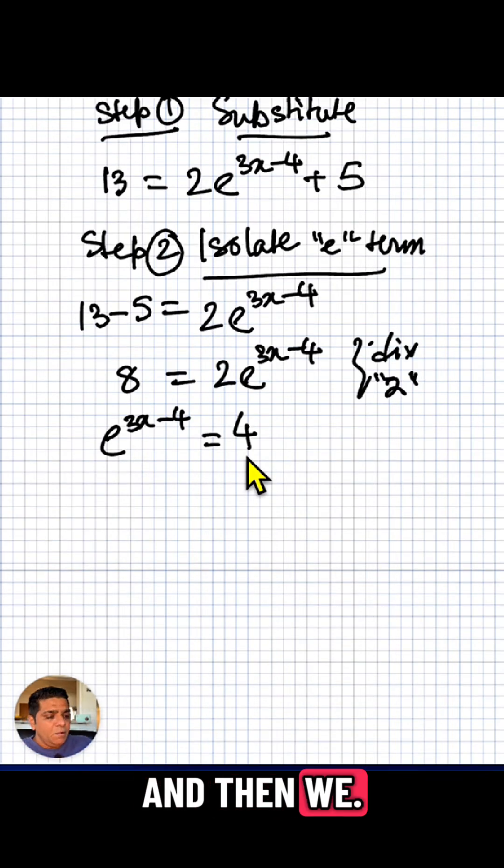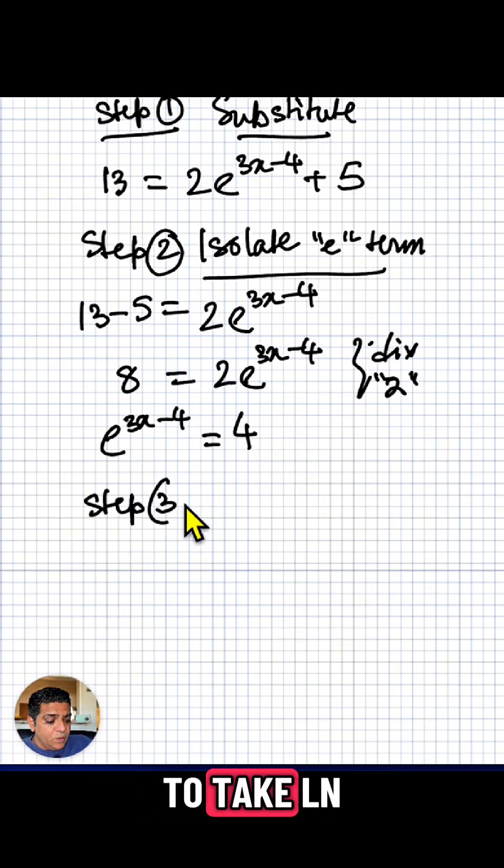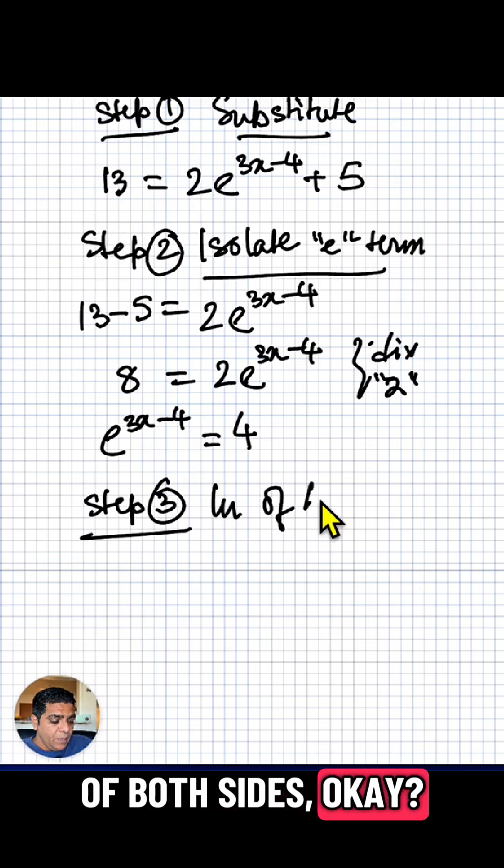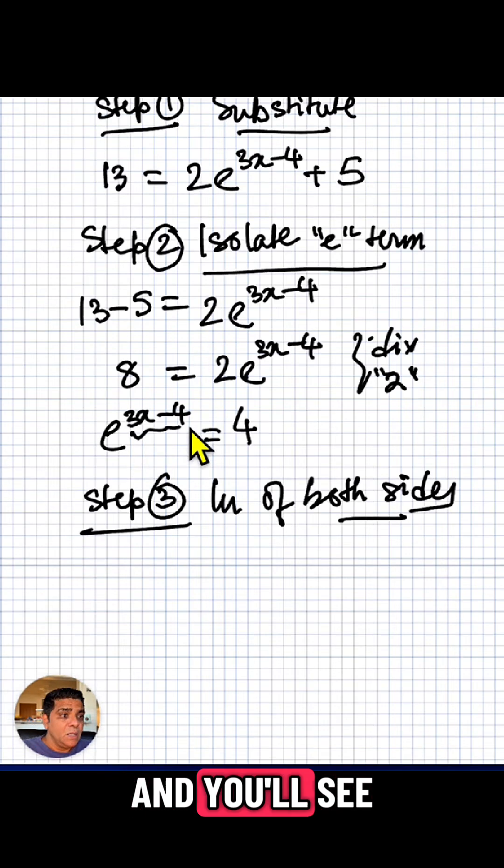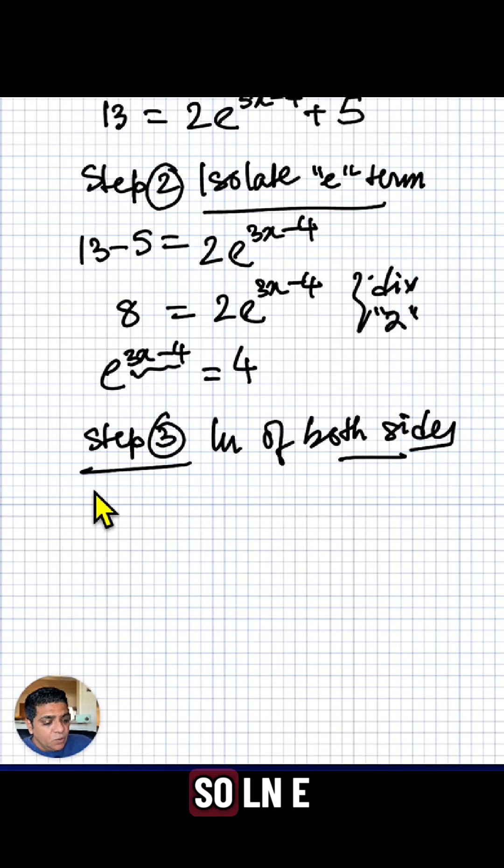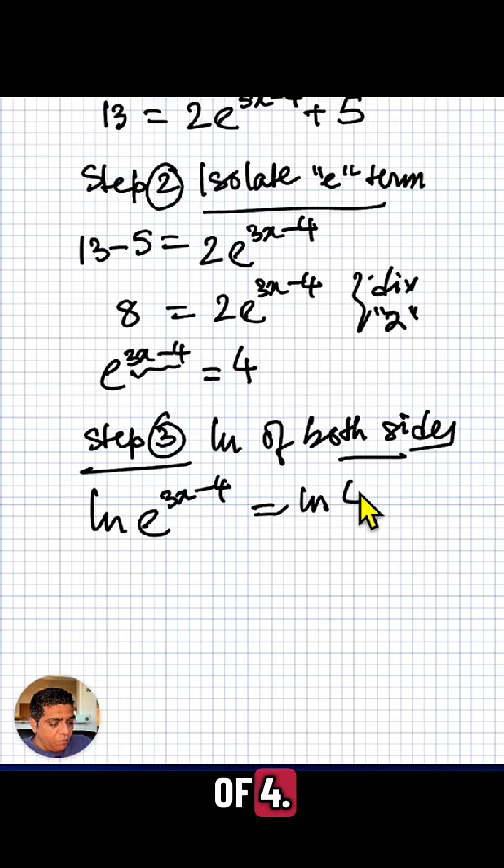Step 3 is we're going to take ln of both sides. Why we do that is because we want to get to the exponent and you'll see in just a second, ln is going to help us do just that. So ln e to the 3x minus 4 equals ln of 4.